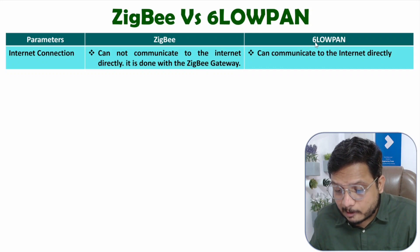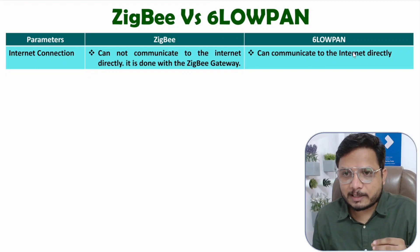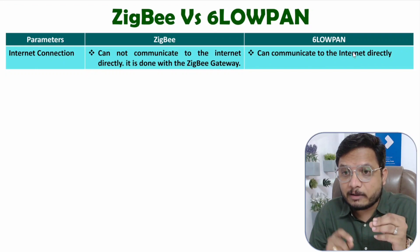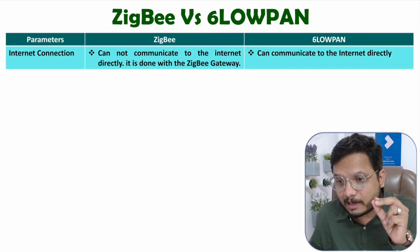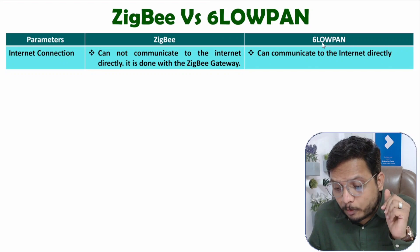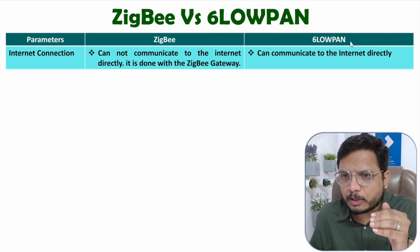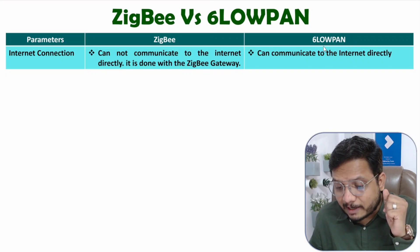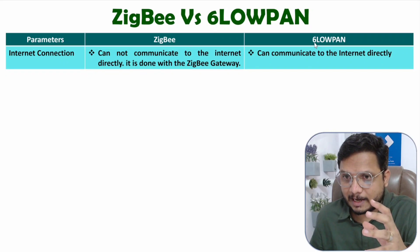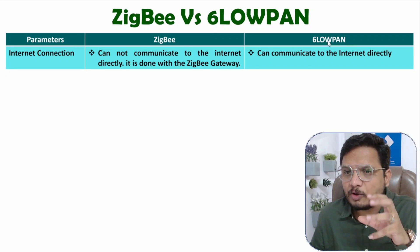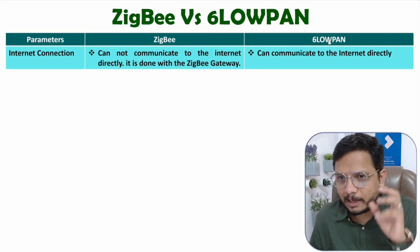While in the case of 6LoWPAN, all the nodes can directly communicate with the internet. The reason is that all the nodes are assigned an IPv6 address. So with the use of IPv6 addresses, 6LoWPAN nodes can communicate to the internet directly. You do not need a central coordinator — all nodes can communicate with the internet.